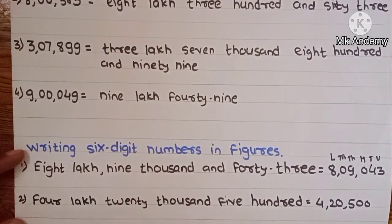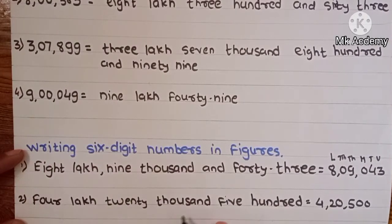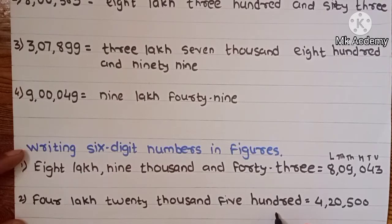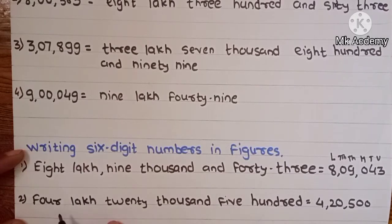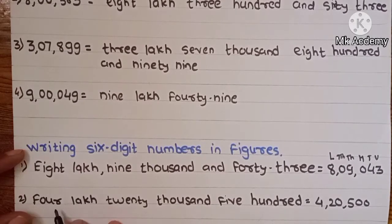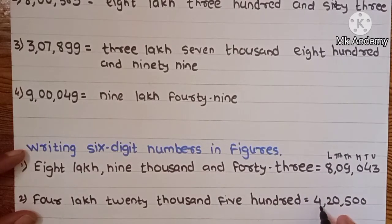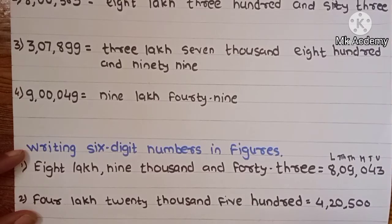Second example: 4 lakh 20,500. At the lakh place we write 4. Now for 20,500 — 20,000 goes at the 10,000 and 1,000 places, and 500 at the 100 place.